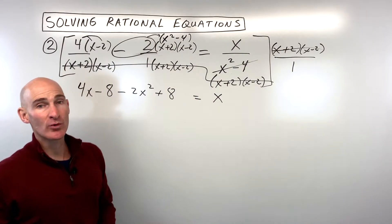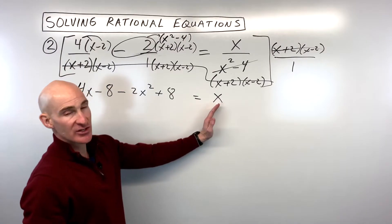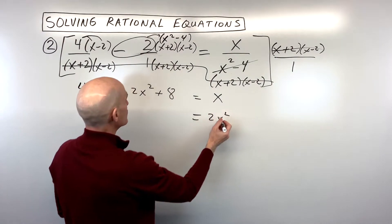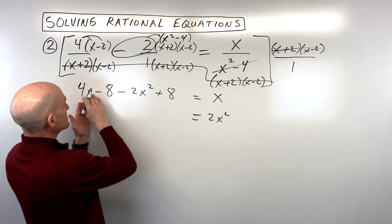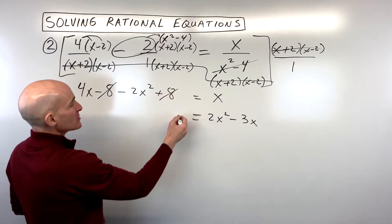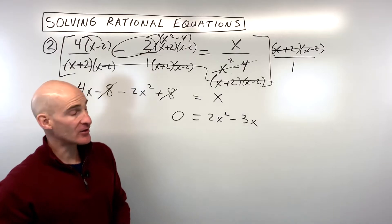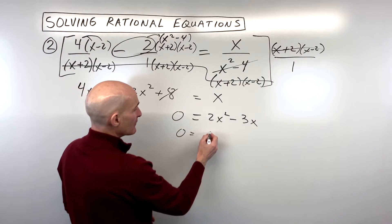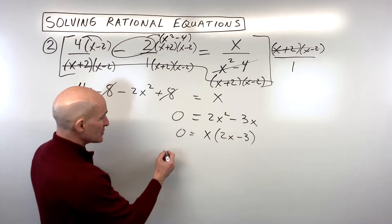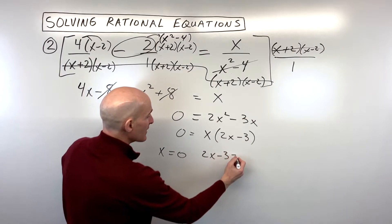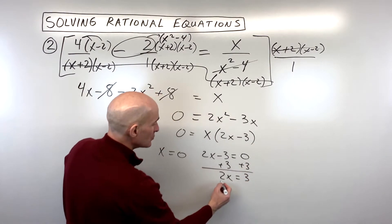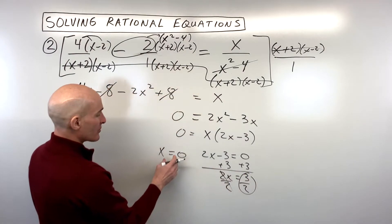Now we have a simpler equation to work with. I'm going to get everything on one side and set it equal to 0. Let me add the negative 2x squared to the right, giving us positive 2x squared. Subtract 4x, so 1x minus 4x gives us negative 3x. And negative 8 plus 8 is 0 — those cancel. Now we've got everything on one side equal to 0, and we're going to factor. The only thing we can factor out is a GCF of x, which leaves us with 2x minus 3. Setting each factor equal to 0: x equals 0, and 2x minus 3 equals 0, so x equals 3 halves.